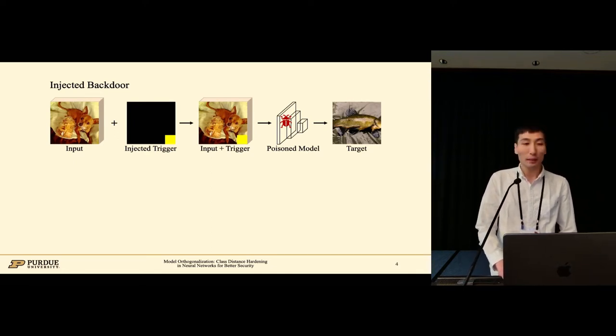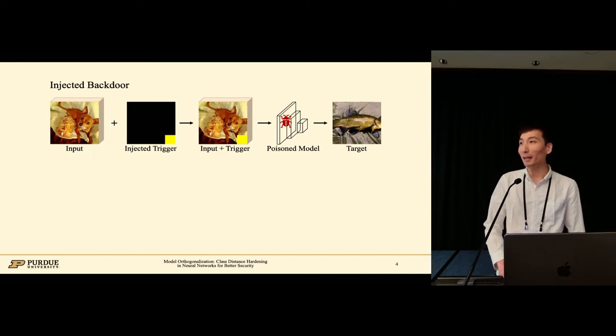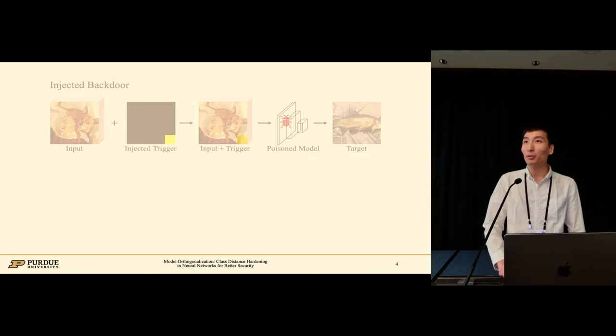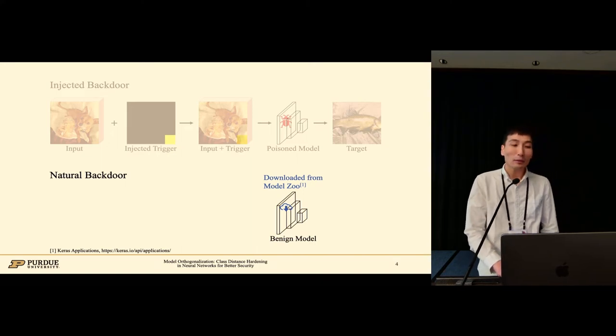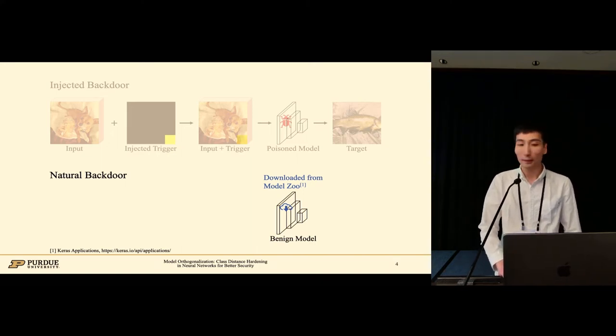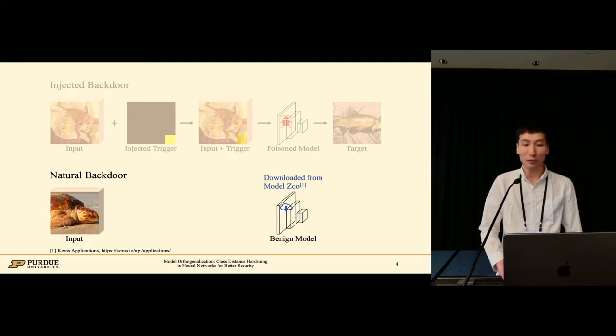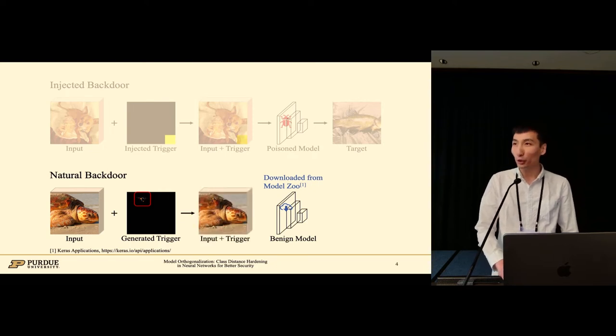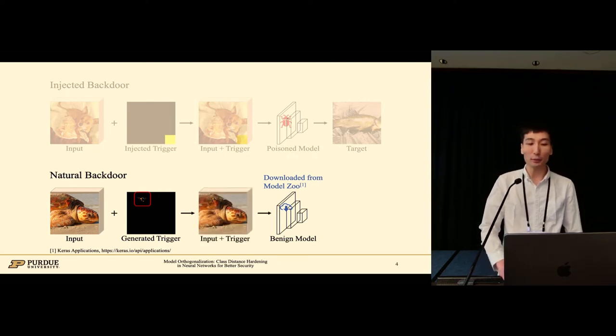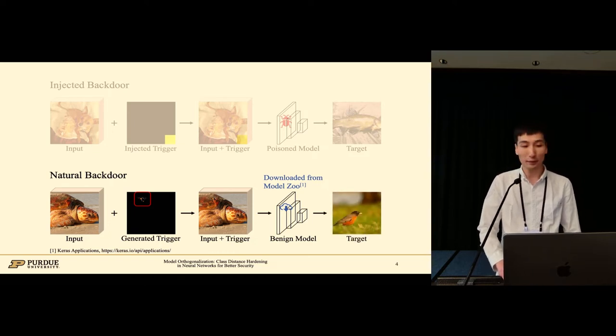As we have seen earlier, the injected backdoors are intentionally added to the model by an attacker. However, we can also find backdoors in benign models called natural backdoors. For example, we downloaded a model from Keras Model Zoo and used an existing trigger generation method to generate a trigger for turtle images. The generated trigger is very small, even smaller than the injected backdoor. When we add this trigger on any turtle images and feed it to the benign model, it will always predict a bird with high confidence. This means both injected backdoor and natural backdoors are severe security problems, and we need to improve model robustness against them.